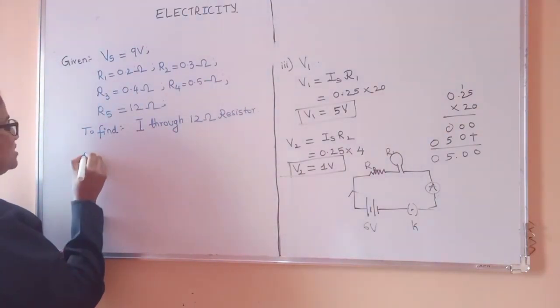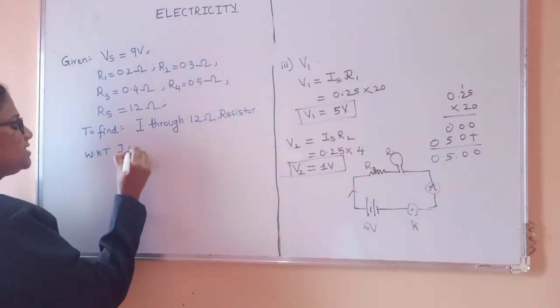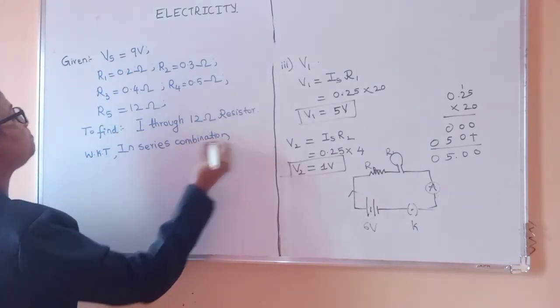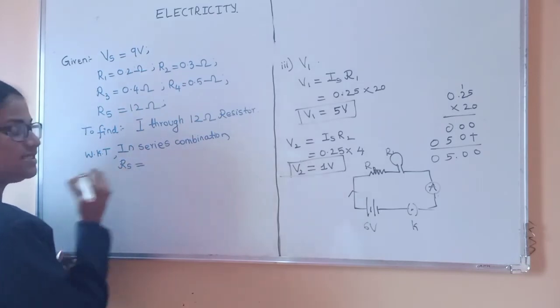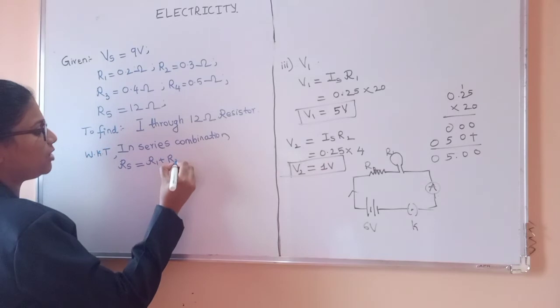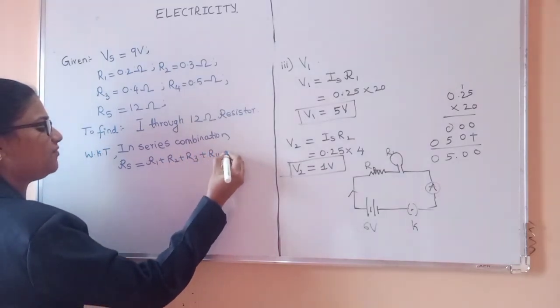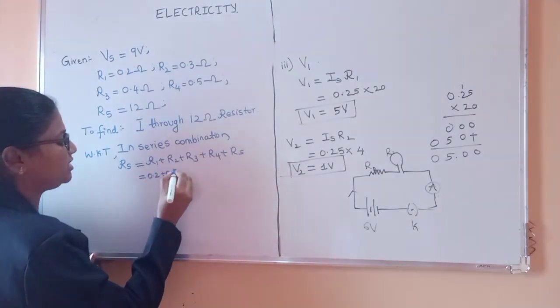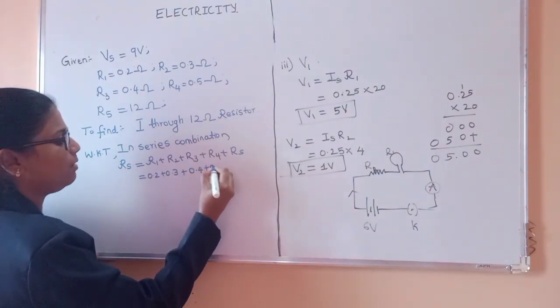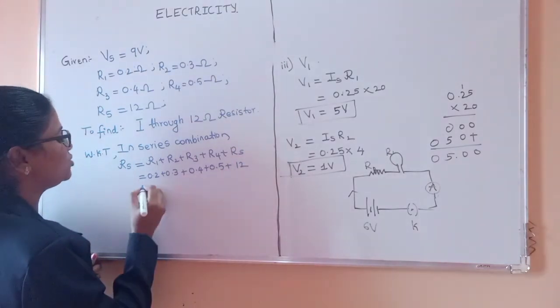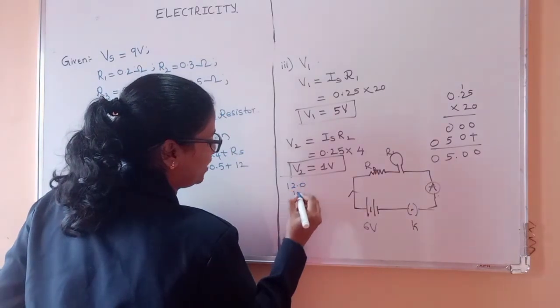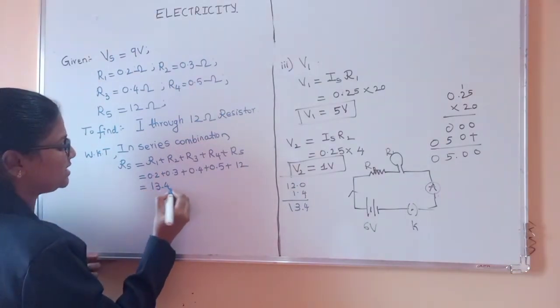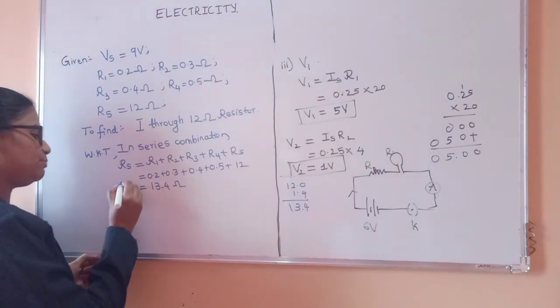So let us do that. For that let us find Rs first. We know that in series combination, Rs is equal to resistance in series equals R1 plus R2 plus R3 plus R4 plus R5, because we have 5 resistors here. So when you add all those: 0.2 plus 0.3 is 0.5, 0.5 plus 0.4 is 0.9, 0.9 plus 0.5 is 1.4 plus 12. So when you add this you will get around 13.4 ohm. So resistance in series, the total resistance is 13.4 ohm.